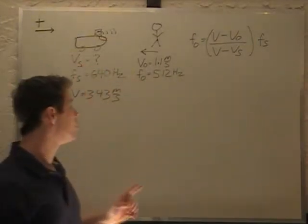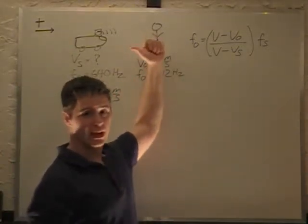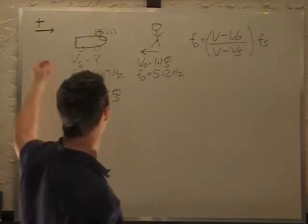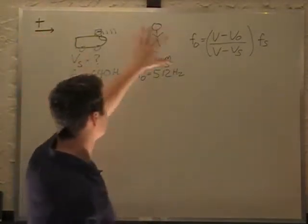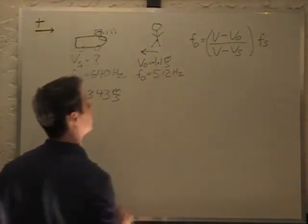One thing we should note: the velocity of the observer is actually in the negative direction, because we always define positive this way for Doppler shift and put our observer on that side.